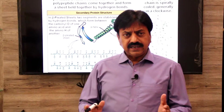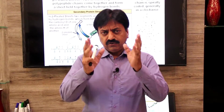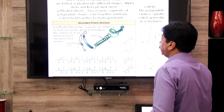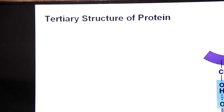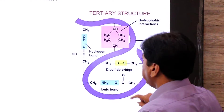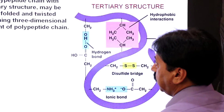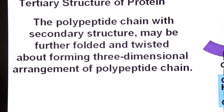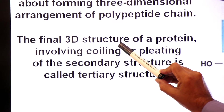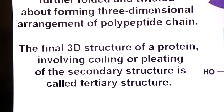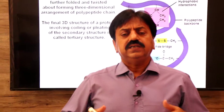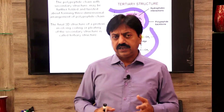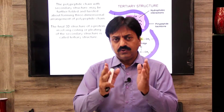Dear students, this secondary structure is further folded into a final three-dimensional shape, which we study as the tertiary structure of protein. This further folding assumes the final shape — here you can see the folding; this three-dimensional shape is the final shape of the protein, further twisted and made more complex.